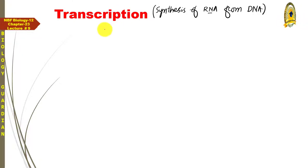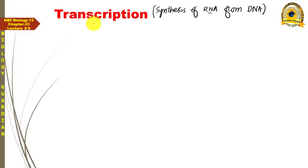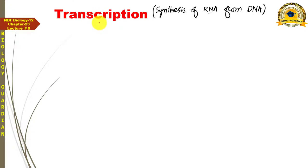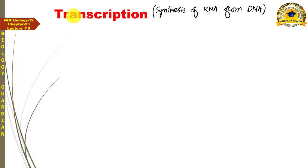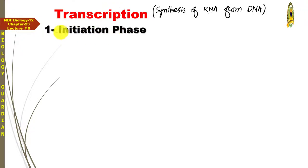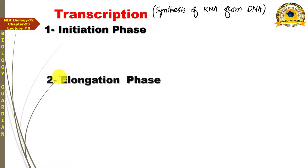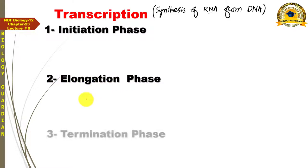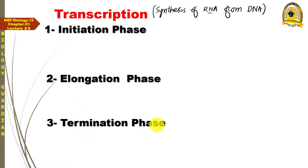اس transcription کے process کو ہم step by step discuss کریں گے، حالانکہ یہ بھی ایک continuous process ہے۔ اپنی آسانی کے لیے transcription کو تین phases میں explain کریں گے: سب سے پہلا step initiation phase، اس کے بعد دوسرا step elongation phase، اور پھر تیسرا step termination phase۔ ان تین steps میں اس process کو complete کریں گے۔